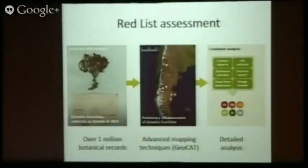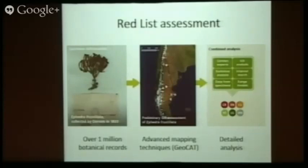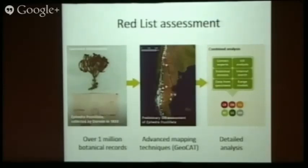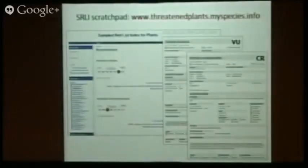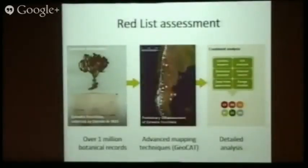We started doing that by looking at the data. We trawled the Kew Herbarium, the Natural History Museum's Herbarium, and everything else we could find, making use of GBIF as another example. I work in the GIS — Geographic Information Systems — unit at Kew, and we look at spatial patterns, the geospatial elements of these plants. We can georeference and find out where exactly they occur on the surface of the Earth, do some spatial analysis, and that helps us get a preliminary assessment. We developed through the course of this project a tool called Geocat, which I'll show you later on.